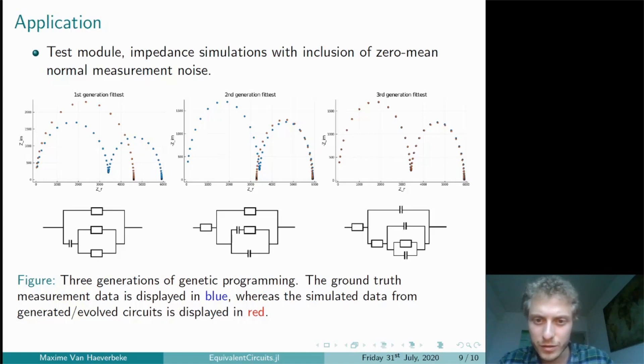And after the third generation, the circuit has already sufficiently evolved so that it can adequately model the bimodal impedance spectrum of the ground truth circuit.